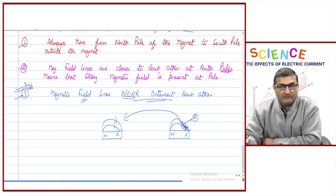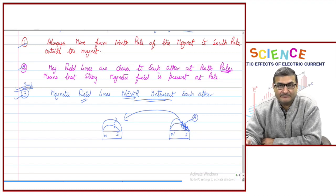These are the three important attributes of magnetic field lines. We will now be talking about the magnetic effects of current. Try to study and practice up to here. Thank you so much.